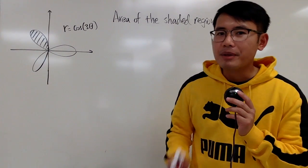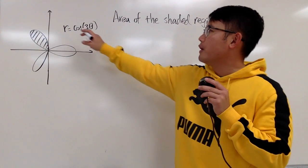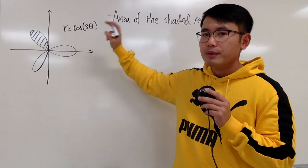Okay, another question on my final exam. Here we are going to find the area of this shaded region. And we have a polar curve, r equals cosine of 3 theta.